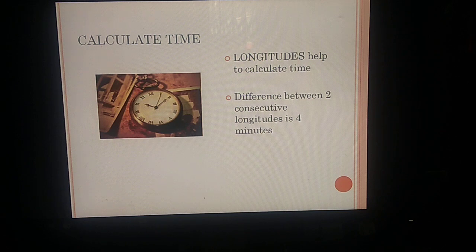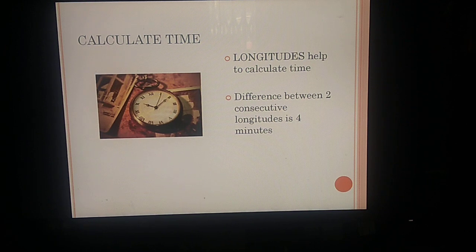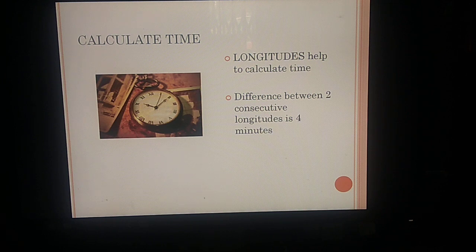When we cross to the east of the International Date Line, a day is added, because all the time differences accumulated add up to a full day. Similarly, when we cross to the west of the International Date Line, we lose or subtract a day.